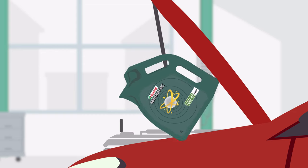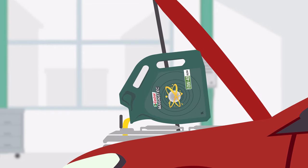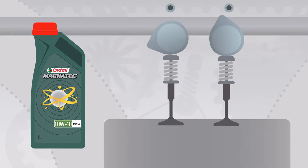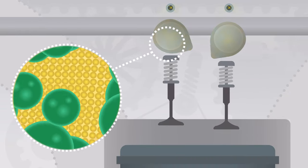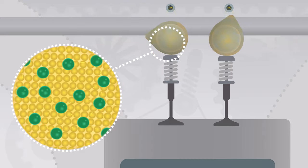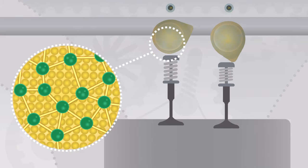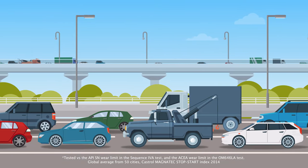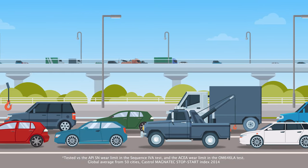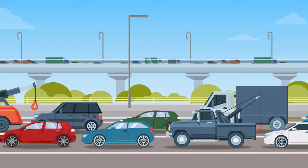It has been engineered to provide protection during modern driving in heavy traffic conditions with frequent stops and starts. This technology is ingenious. The molecules in Castrol Magnatec 10W40 dual lock cling to critical engine parts and lock together. As a result, the oil forms a powerful force field of protection, reducing both warm-up and stop-start wear each by 50%. That's huge.